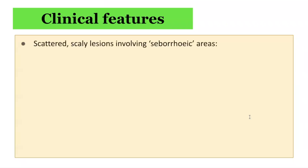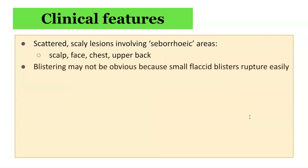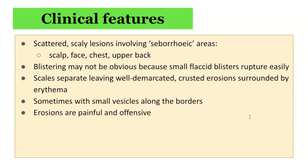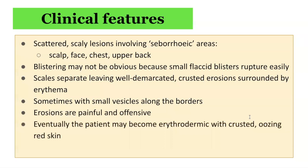In terms of clinical features, cases present with scattered scaly lesions involving seborrheic areas typically, including the scalp, face, chest, and upper back. Blistering may not be obvious because small flaccid blisters rupture easily with minor trauma, leaving behind scale, erosions, and crusting. The scales separate, leaving well-demarcated crusting erosions surrounded by erythema. Sometimes there are small vesicles along the borders. Erosions can be painful and offensive, and eventually the patient may become erythrodermic. Oral lesions are uncommon, in contrast to Pemphigus vulgaris.